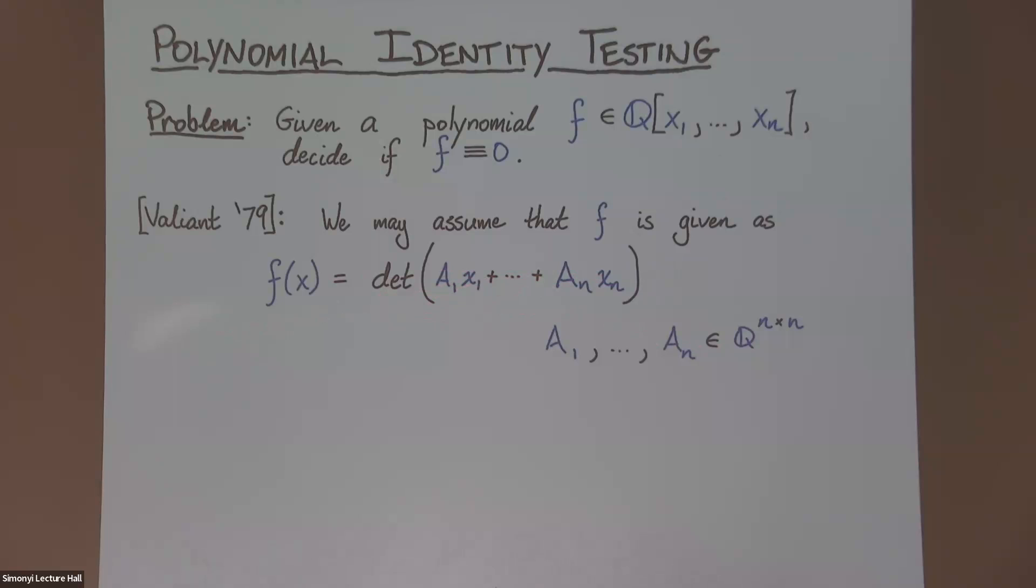There's something more efficient you can do if you allow yourself the use of randomness. In fact, the algorithm is so simple, here it is. You're going to sample a random point and evaluate this symbolic determinant at that point. This sort of representation allows you to evaluate the polynomial easily, because I just plug in values for the x's, and then I compute this determinant as some actual number. Now, I look at this random evaluation, and I tell you that the polynomial is zero, exactly when I see a zero evaluation.